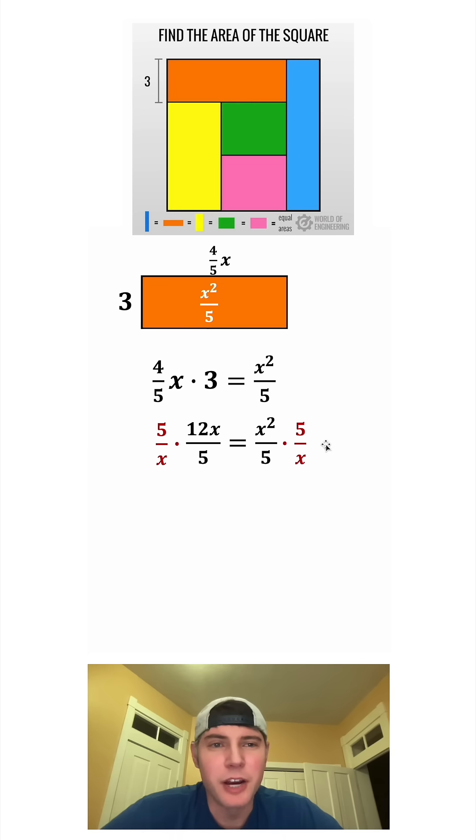Next, we can multiply both sides by 5 over x. And we are allowed to divide by x here because we know x is not equal to 0. On the left-hand side, these two 5s cancel each other out, and these two xs cancel each other out. All we have left is 12. And on the right-hand side, these two 5s cancel each other out, and x squared over x is just x. So now we know that 12 is equal to x.